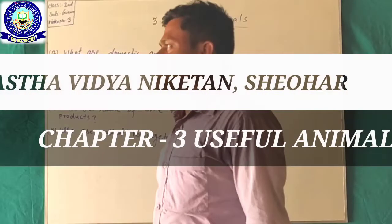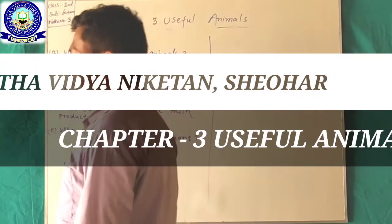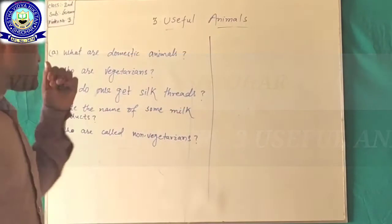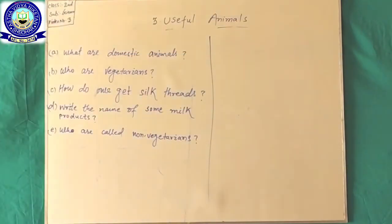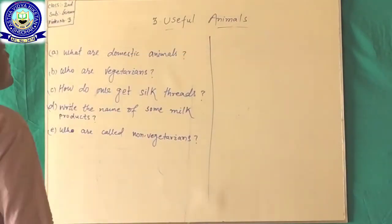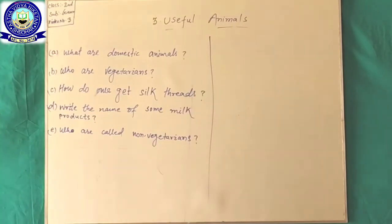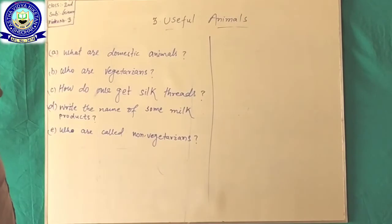Good morning, students. I, Rajiv Kumar, have to raise questions related to chapter number 3 of class 2nd in subject science. Your chapter number 3 is Useful Animals.